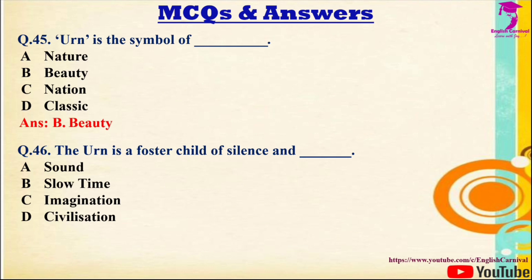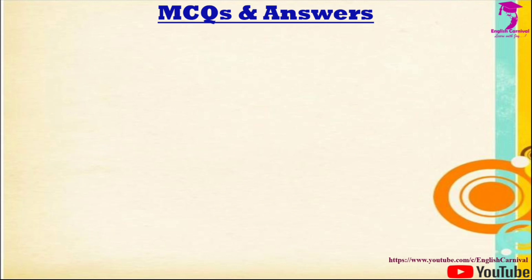Question 46: The urn is a foster child of silence and — Options: A) Sound, B) Slow time, C) Imagination, D) Civilization. Correct answer is B — the urn is a foster child of silence and slow time.